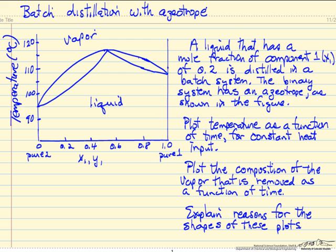And then how does the composition of the vapor change if it does change as we remove the vapor from the system as we evaporate the liquid, and explain the reasons for the particular shapes of these two graphs.